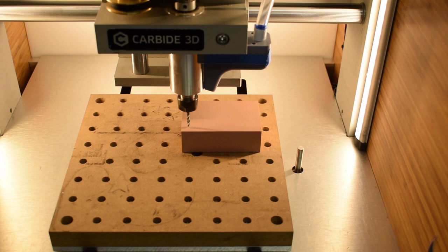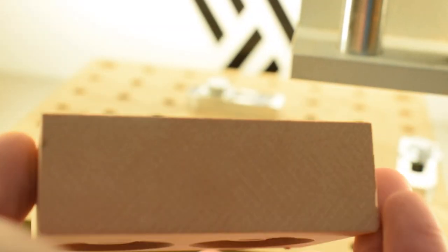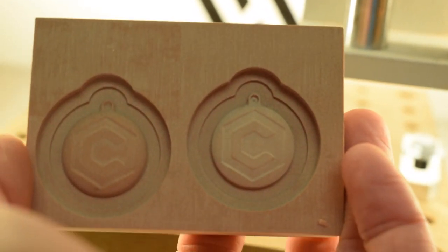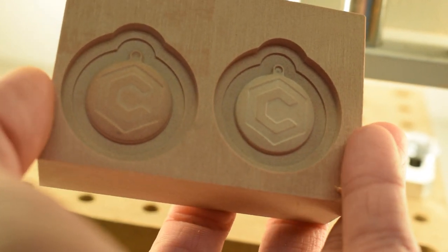It's sort of the ultimate blank slate for 3D carving. Renshape can also hold shockingly fine details, and it's also good for applications like vacuum forming because it's slightly porous. So let's figure out how to machine this stuff.